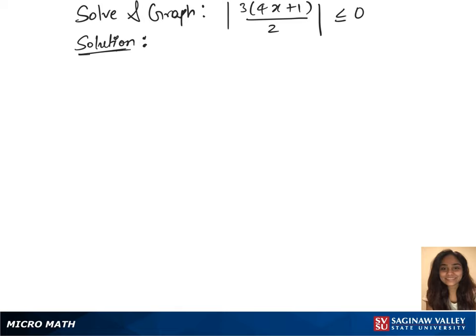To solve this absolute value inequality, we'll first write this inequality as minus 0 less than or equals to 3 times 4x plus 1 over 2, less than or equals to 0.